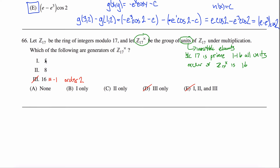You could compute 5 to successive powers and figure out the smallest integer such that 5 to that power equals 1 mod 17. But there's a shortcut: the order of an element always divides the order of the group, so the order of these elements is guaranteed to divide 16. If I can show the order is more than 8, then it must be exactly 16.